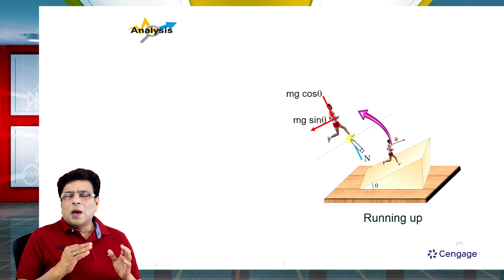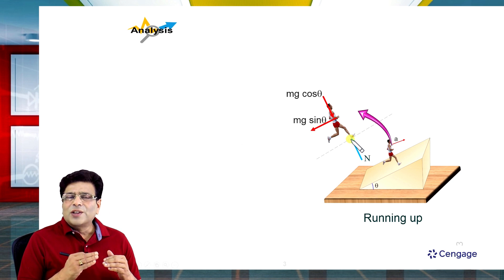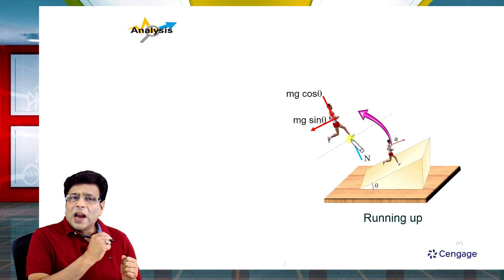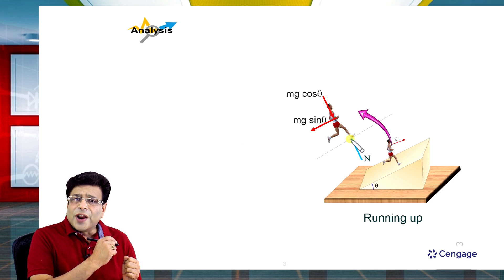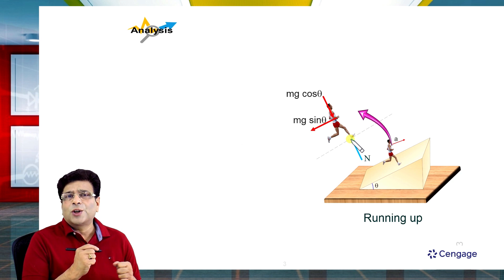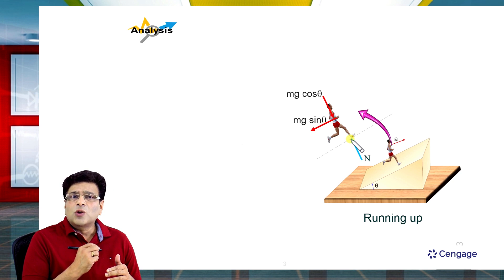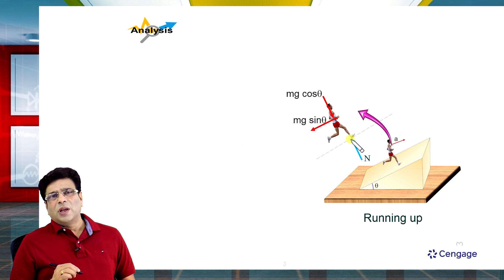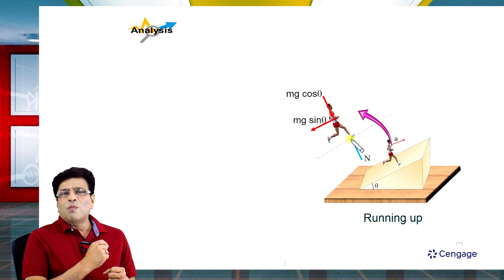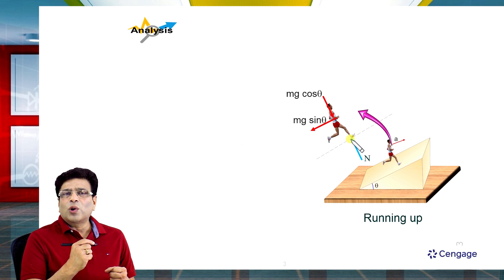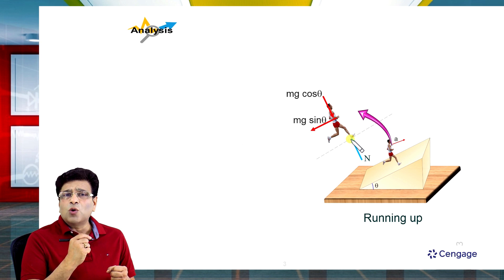Now we have to find the maximum acceleration, and the man is running in the upward direction. That means friction should act in the direction of motion. If friction is in the direction of motion, then we can say that for maximum acceleration, friction will be at its maximum possible value.